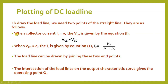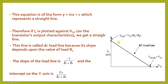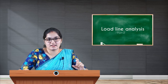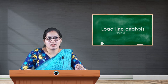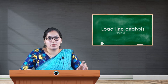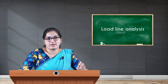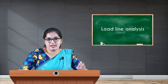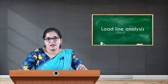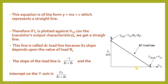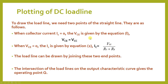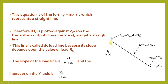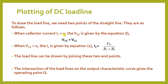To get the point on the Y-axis, we put VCE = 0. When the X-axis value is 0, we get the value on the Y-axis. Similarly, to get the point on the X-axis, we put the Y-axis value IC = 0. When collector current IC is taken as 0, VCE is given by the equation VCE = VCC.